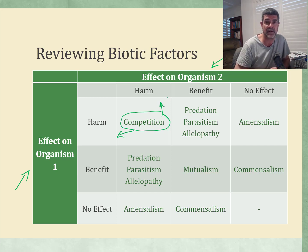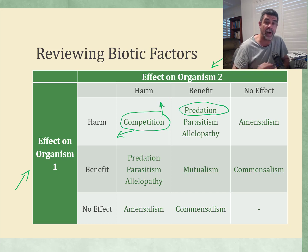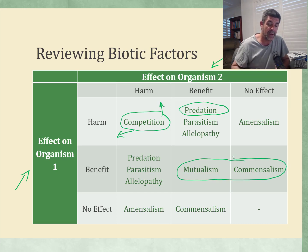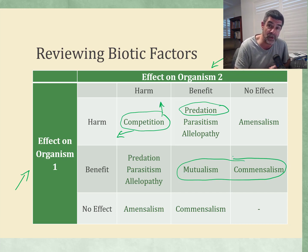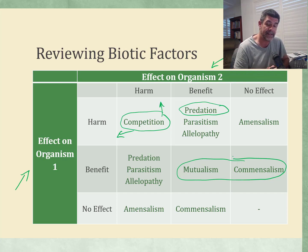We're going to focus on a couple of interactions. Predation, where the predator obviously benefits and the prey experiences harm. We'll also mention some examples of symbiosis, which include benefits to one or both partners — mutualism, where both benefit, and commensalism, where one benefits and the other is neither benefited nor harmed. So as long as there's no harm done and another species benefits, that's commensalism.